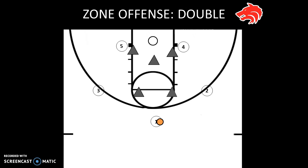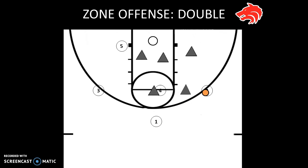As the ball goes to the wing, the post player on that side — in this case four — comes up to the high post. The ball goes over to two, and now the defense has shifted, and this is what we're really going to take advantage of to get open shots. As two catches the ball, four is coming up to the high post.